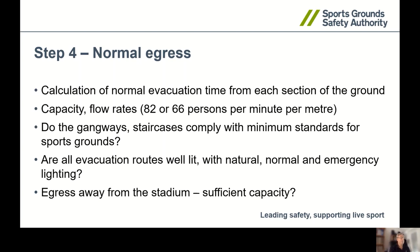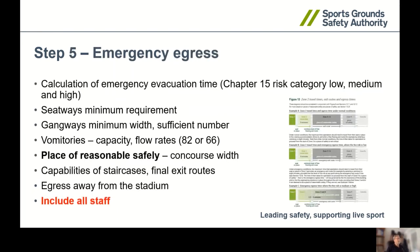It's really important that all the particular standards for that stand are maintained — evacuation lighting, gangways, all the stairs. Then step five, you look at the emergency egress. The emergency egress is based on the fire risk assessment. A high fire risk — such as a timber stand — is based on two and a half minutes. A medium one would be six minutes and a low one would be eight minutes. Once you've got that evacuation time, you look at the flow rate, which for emergency egress is exactly the same as normal egress: 82 people per metre per minute on the flat and 66 per metre per minute on stairs. So for a high-risk stadium you would multiply two and a half minutes by 66 on a stair by your vomitory width, and that would give you a capacity.